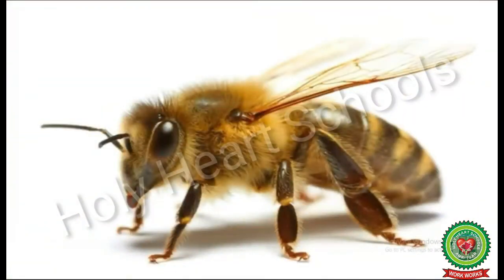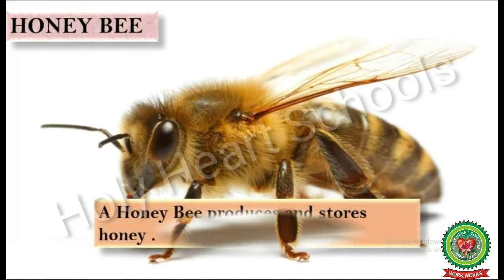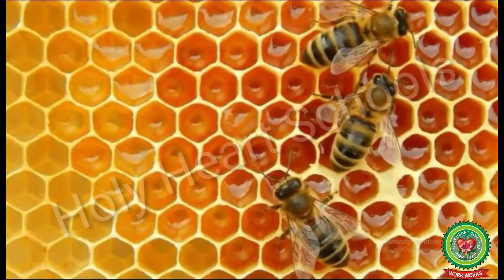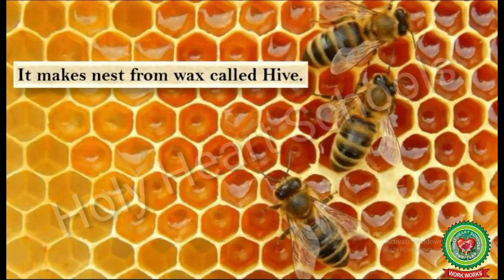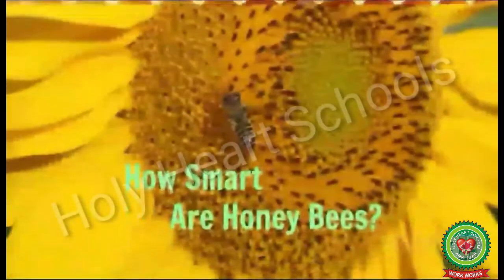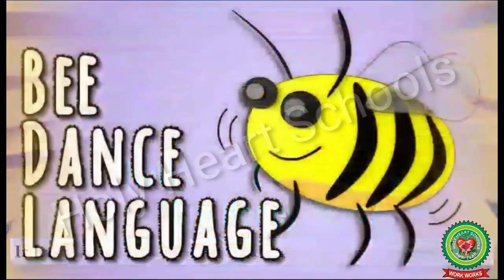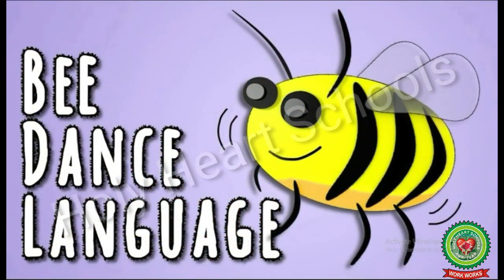Next is honey bee. Honey bee produces and stores honey. It makes nests from wax called a hive. It has a remarkable capacity to learn and remember things. Honey bees communicate with each other by dancing.